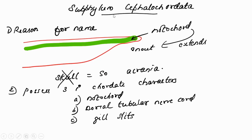Good morning dear students. Today I am going to start the next sub-phylum, that is Cephalochordata. Last class we finished Urochordata. First point: reason for the name Cephalochordata. 'Cephalo' means something relating to the head. In Cephalochordata, the anterior end has a special feature — the notochord extends more towards the anterior tip of the body, and that extension creates a snout.